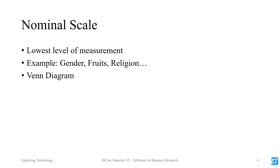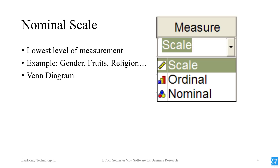If we look at measurement, we use a Venn diagram. The categories are mutually exclusive. This Venn diagram represents the nominal scale.